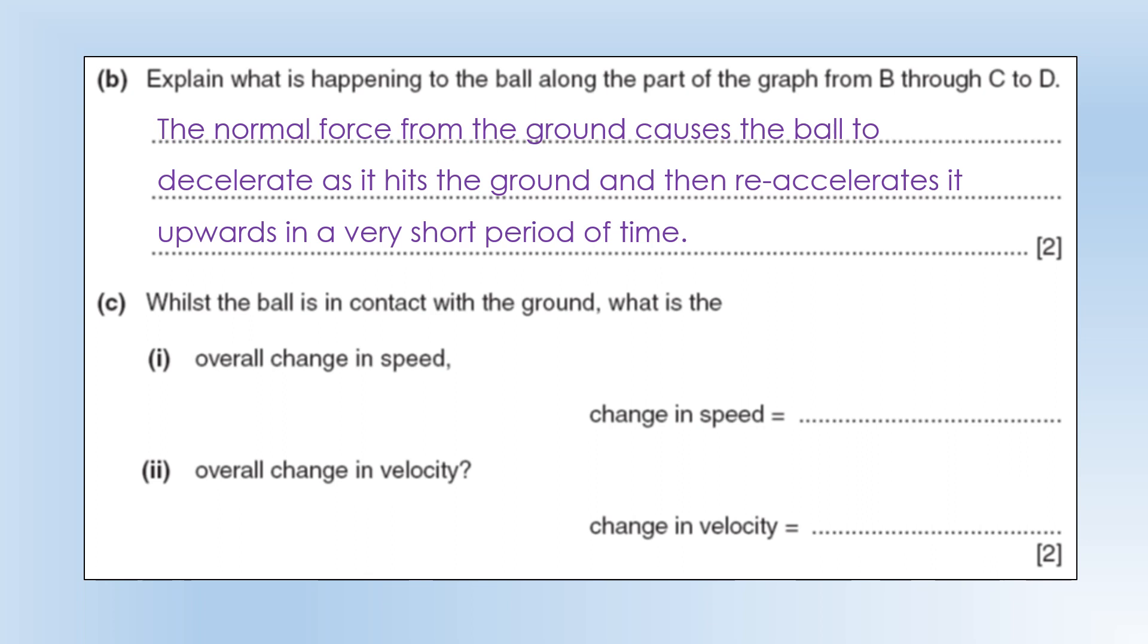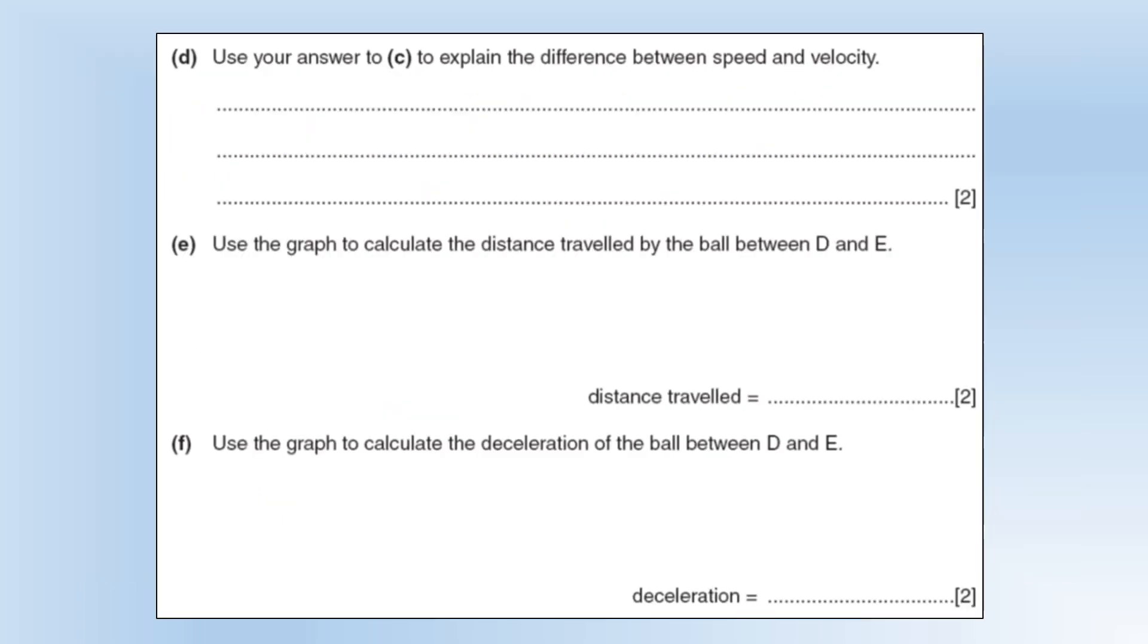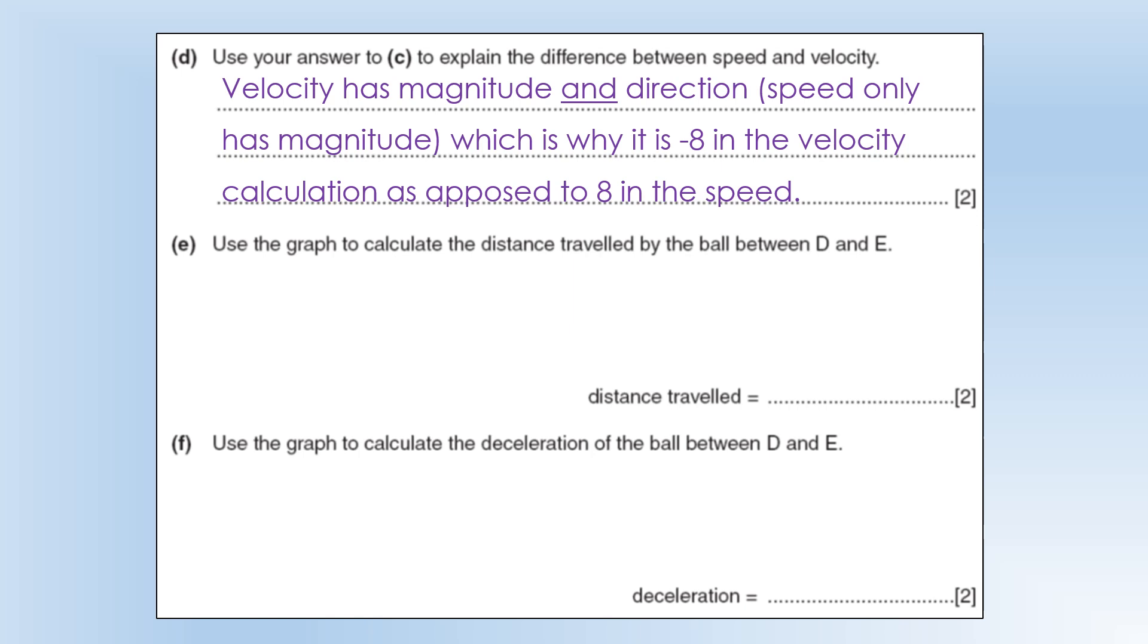Whilst the ball is in contact with the ground, what is the overall change in speed? The speed before is 9.5, the speed after is 8, so you get a difference of 1.5 meters per second. With change of velocity, the direction becomes important. Because it's going in the opposite direction, the 8 I'm going to give it sign minus 8. If downwards is positive plus 9.5, upwards must be negative minus 8. That gives us 17.5 meters per second. Use your answer to explain the difference between speed and velocity. Velocity has magnitude and direction. Speed only has magnitude. That's why the velocity is minus 8 whereas in the speed equation it was 8.